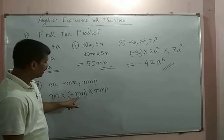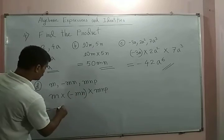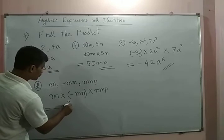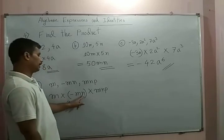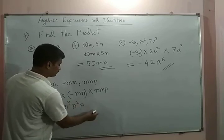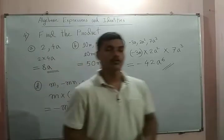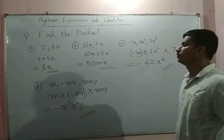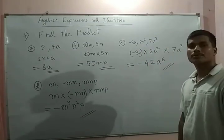M square into m is m to the power 3. Here we have n, n into n is n square, then p. Okay, this way we can find a product of monomials. Thank you students.